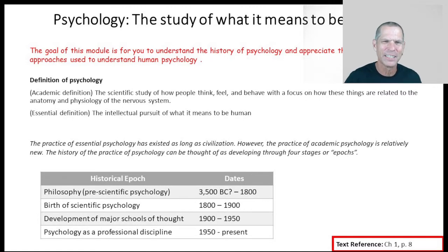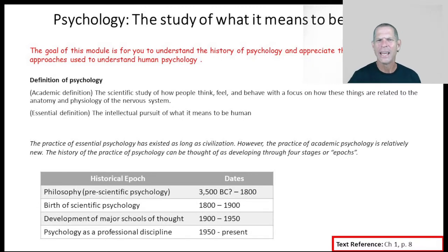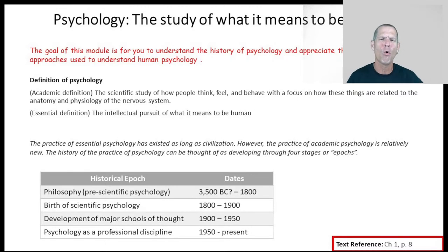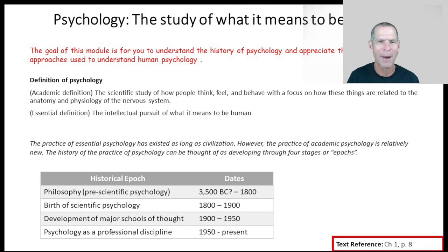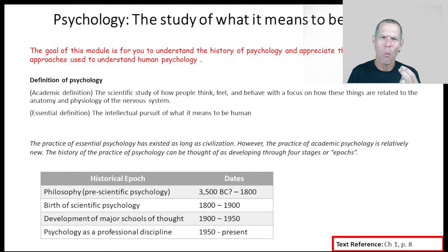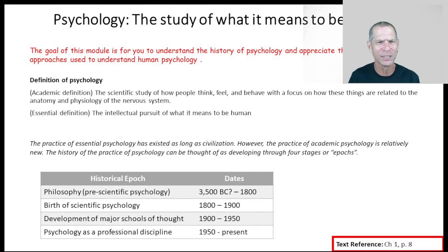Before I get started with modern psychology, I'd like to roll that back and talk about the essential definition. Really, the essential definition of psychology is the intellectual pursuit of what it means to be human — how humans think, how humans feel, and how humans behave. One way of thinking about psychology is that it's the oldest pursuit in the history of humankind. As long as we've had campfires to sit around and time to think, people have wondered what it means to be human.